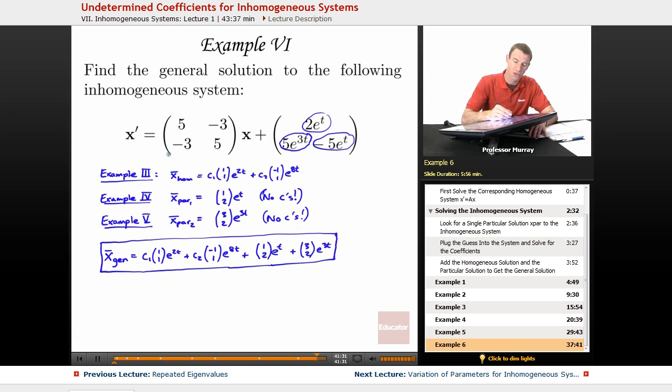So we first looked at the homogeneous solution, and then back in example 3, we found that the homogeneous solution had this form right here. And then in example 4, we looked at this part, the e to the t terms of the inhomogeneous solution, and we found a particular solution using undetermined coefficients that will produce that part of the inhomogeneous terms.